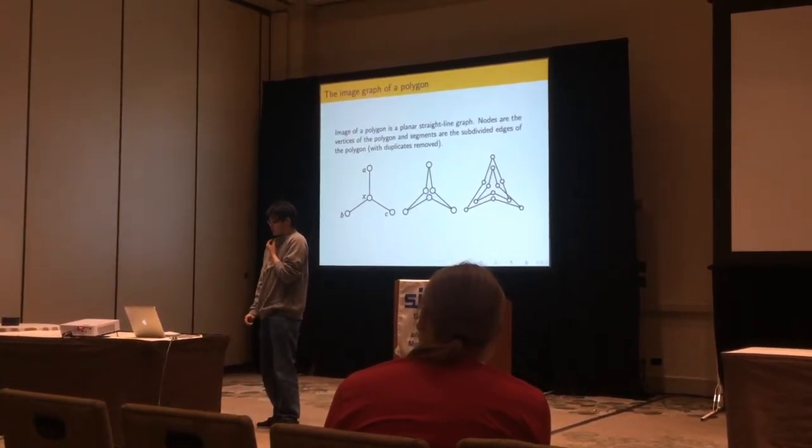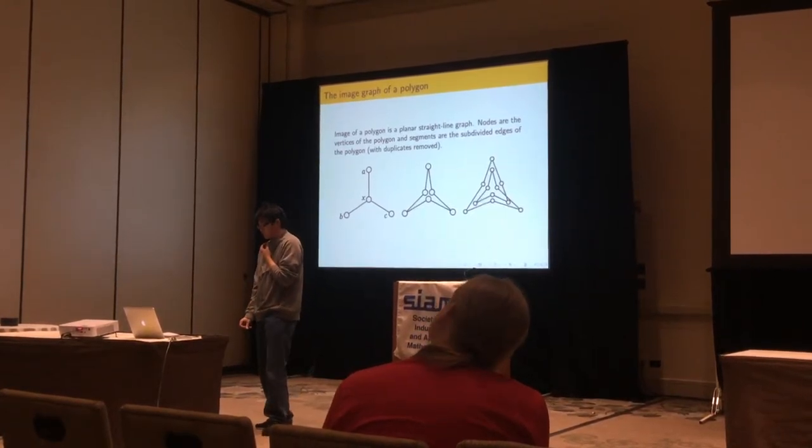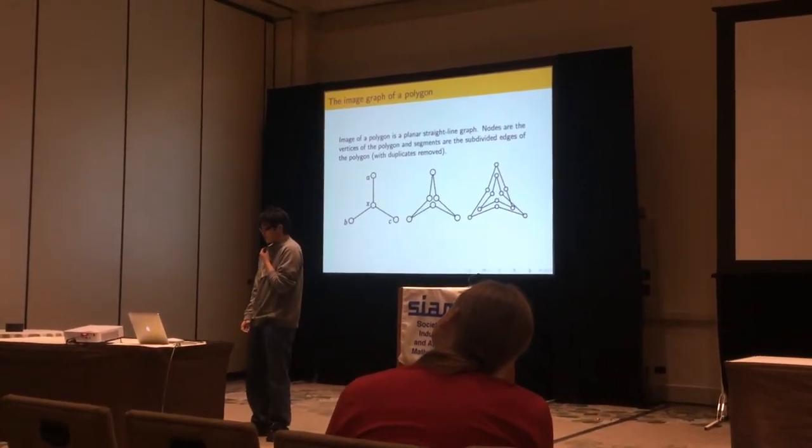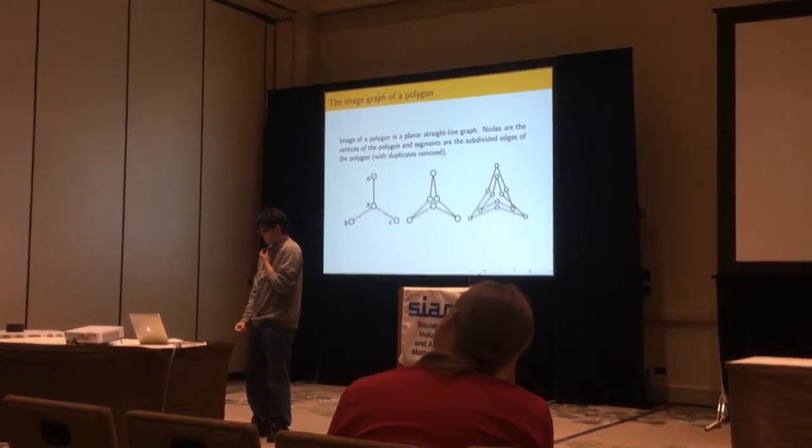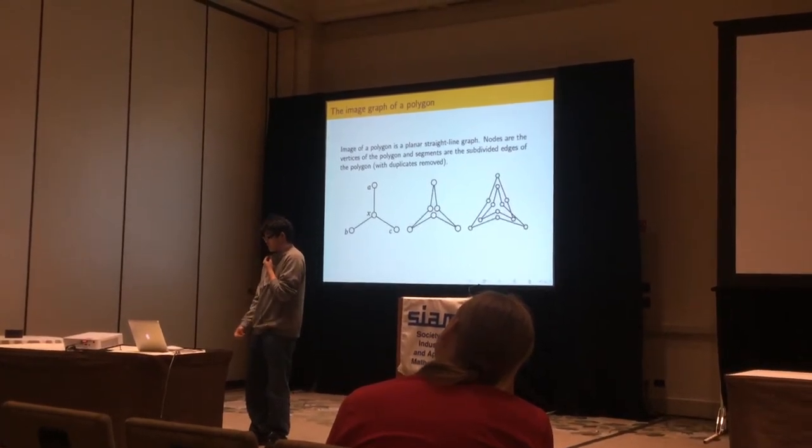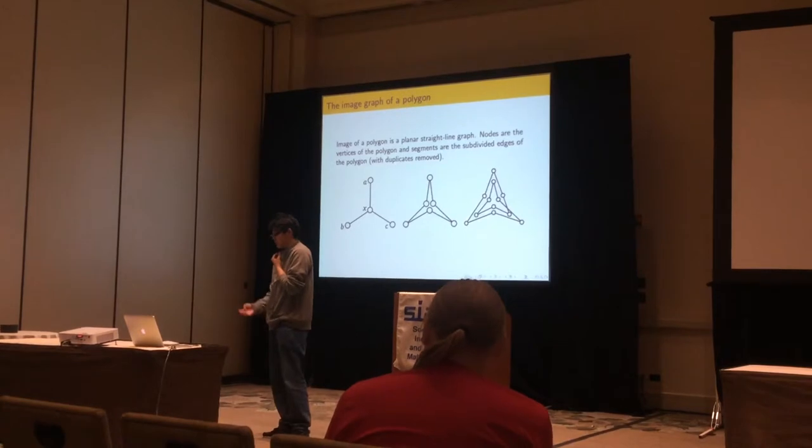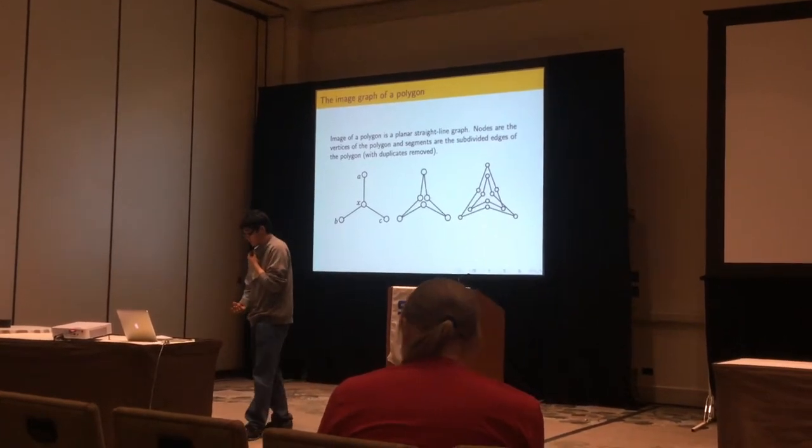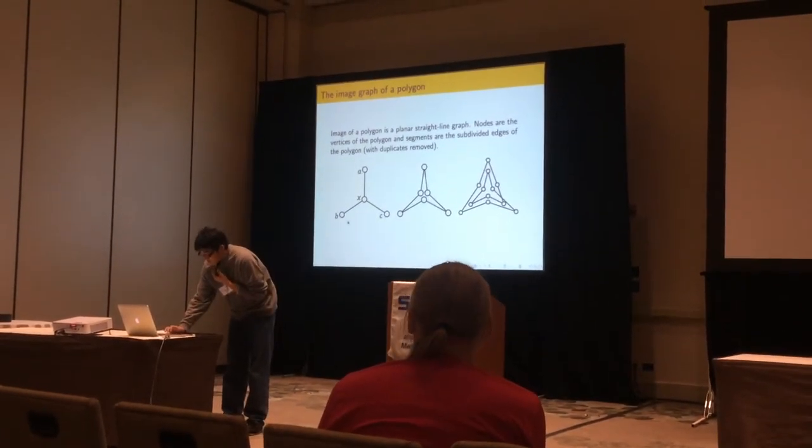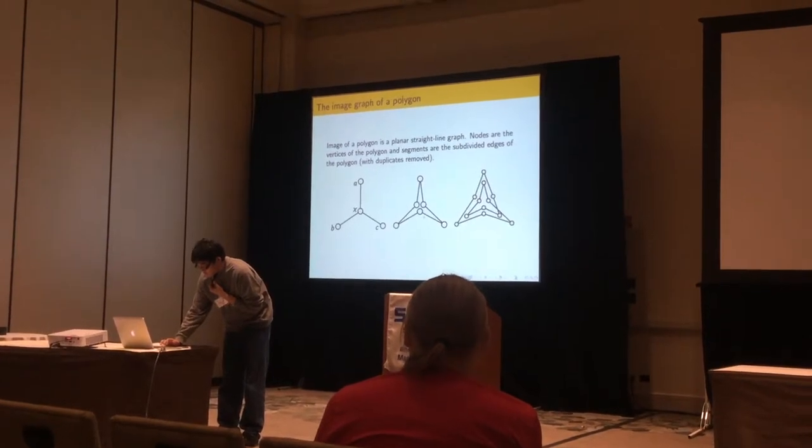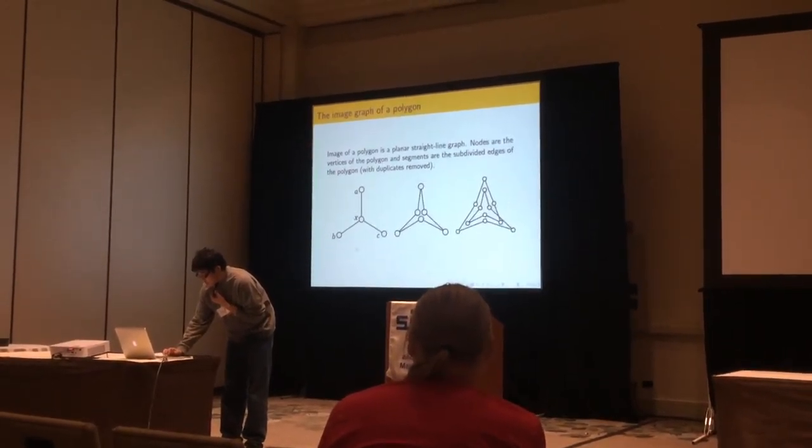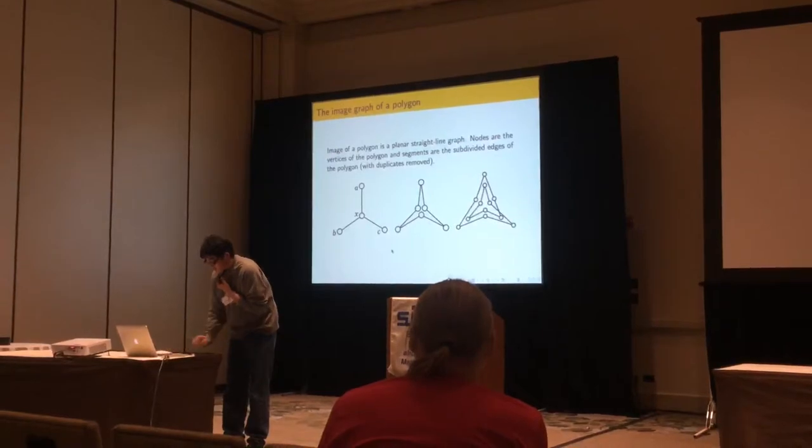So a polygon, this is the image of the polygon on the plane, the planar straight line graph, where the nodes are the vertices of the polygon, and the segments are the subdivided edges of the polygon. And we just remove the duplicate vertices. For example, the polygon, for both of these two polygons, A, X, B, X, C, X, and A, X, B, X, C, X going around twice,